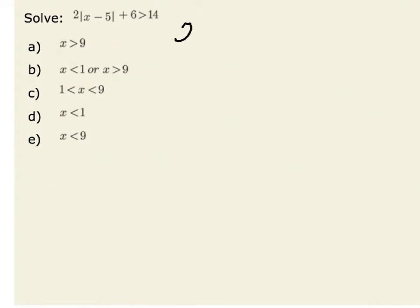In this problem, we are asked to solve the absolute value inequality 2 times the absolute value of x minus 5 plus 6 is greater than 14.